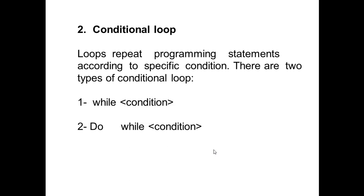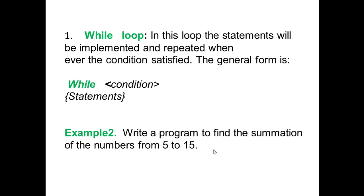The second loop statement is the conditional loop. A loop repeats programming statements according to specific conditions. There are two types of conditional loop: while condition and do-while condition. In the while loop, the statements are implemented and repeated while the condition is satisfied. The general form is: while condition — statements.